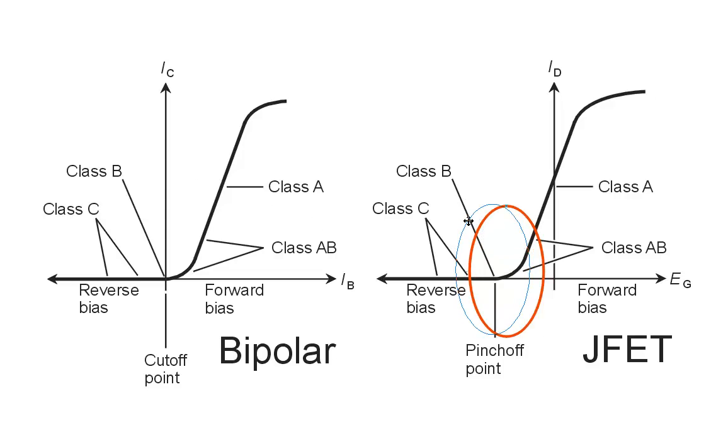Class B operation, during half of the signal cycle, the device conducts, during the other half, it doesn't. So in effect, we get half wave rectification of the input signal waveform. In order to get significant amplification, though, we have to drive the device rather hard.